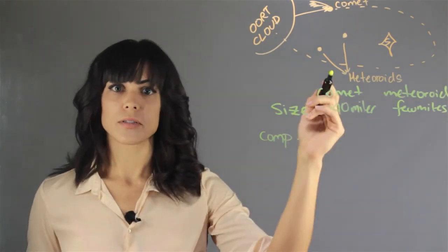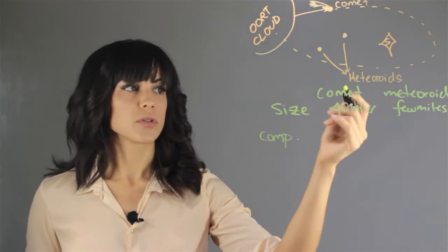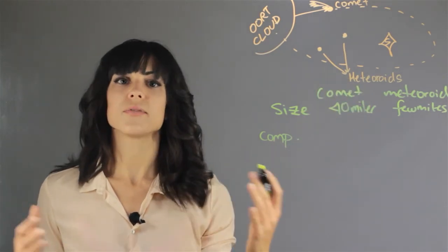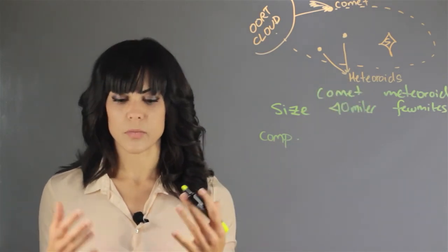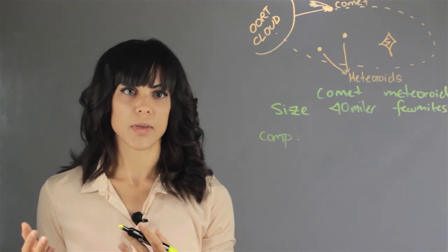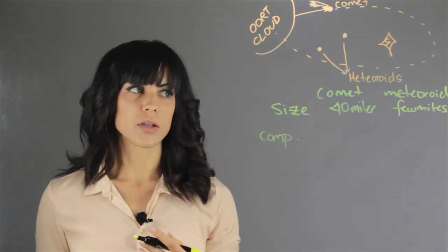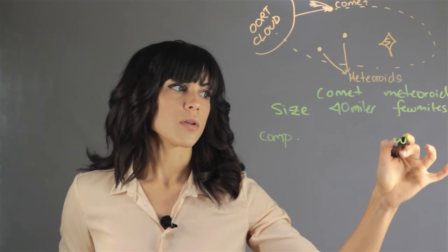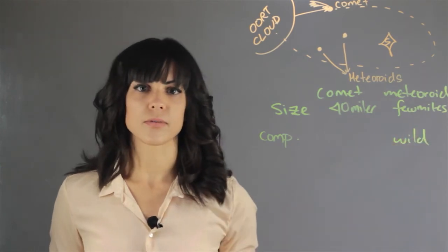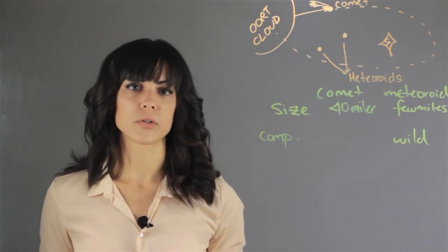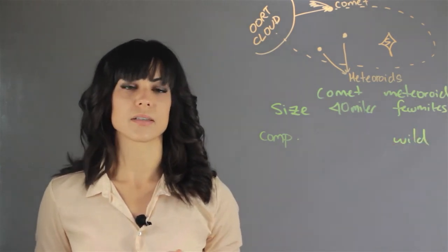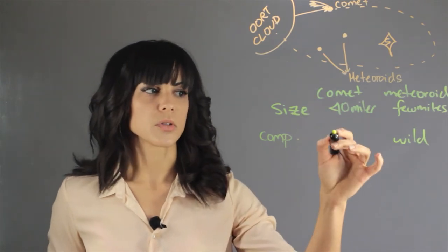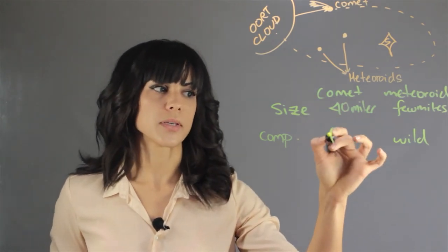What are meteoroids made out of? Meteoroids only have whatever debris composition they picked up in space, so it's a little bit more of a wild composition. You can find many types of metals, many types of ices and gases trapped in meteoroids, while comets are mostly made out of frozen gases.